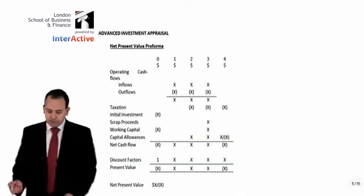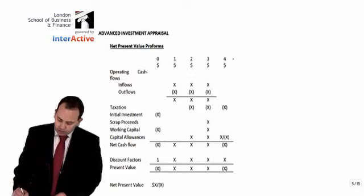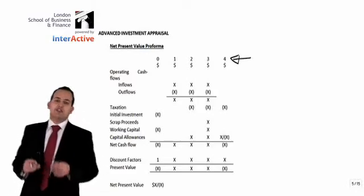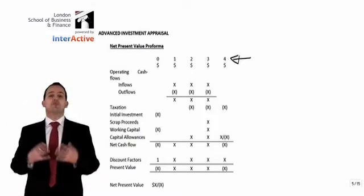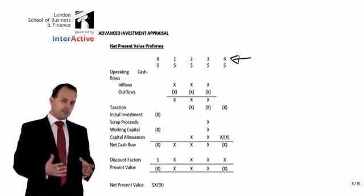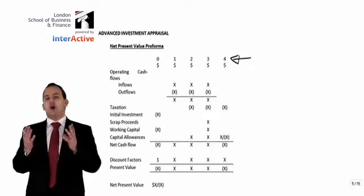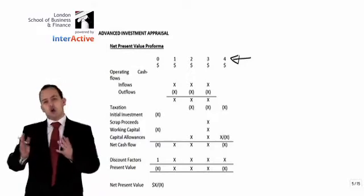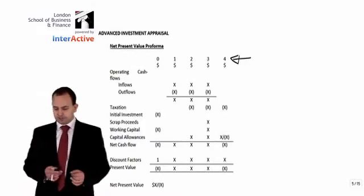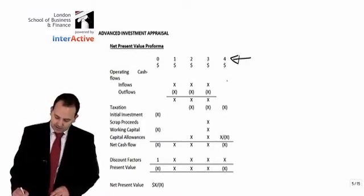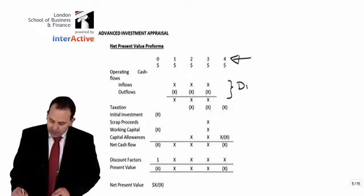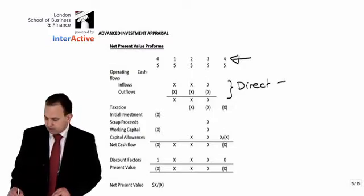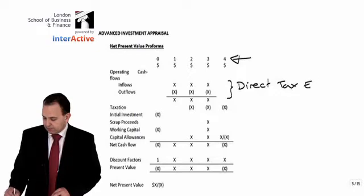So on the basic pro-forma, start off by listing out all of the years that the cash flows take place. We are only interested in cash flows — not provisions or accounting concepts such as depreciation. We are only interested in real cash that comes into the business or real cash that goes out of the business. We will then look at operating cash flows, which can include inflows and outflows, and these will have a direct tax effect.